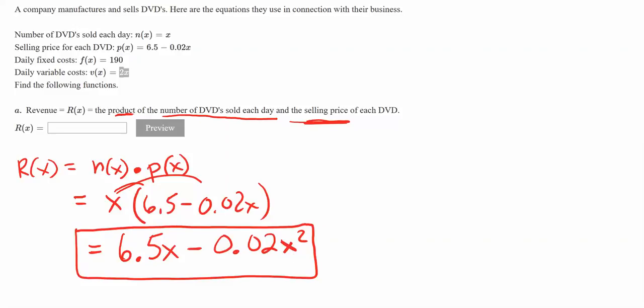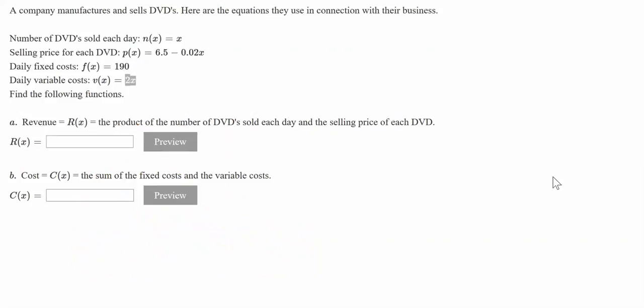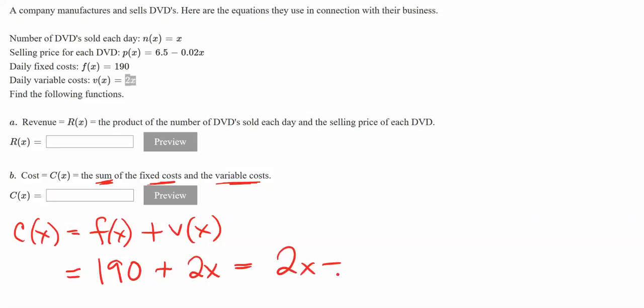Part B: the cost function. Cost is the sum, so we're adding fixed costs and variable costs. As a formula definition, it's the sum of the fixed costs, f(x), and the variable costs, v(x). As given, f(x) was 190 and v(x) was 2x. You can write it as 190 plus 2x, or as 2x plus 190. Both work fine.